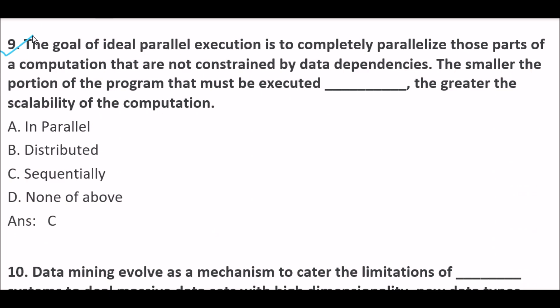The goal of ideal parallel execution is to completely parallelize those parts of a computation that are not constrained by data dependencies. The smaller the portion of the program that must be executed blank space, the greater the scalability of the computation. Option A: In parallel. Option B: Distributed. Option C: Sequentially. Option D: None of the above. Right answer is Option C — Sequentially.